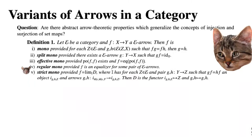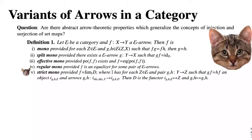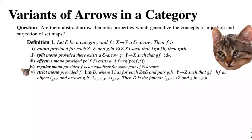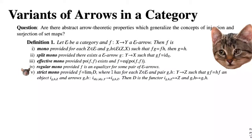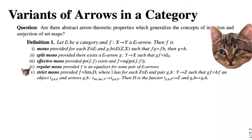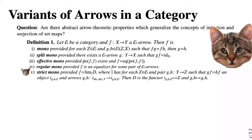We say that F is strict mono provided that F is the limit of a certain diagram over a category I, where for each object Z in E and each pair of arrows G and H from Y to Z such that GF = HF, we have objects I_{G,H,Z} in I with arrows G and H from I_{id_Y} to I_{G,H,Z}. The functor D associates I_{G,H,Z} to Z and maps those arrows to themselves, so G goes to G and H goes to H. We can think of F as being a kind of multiple equalizer.